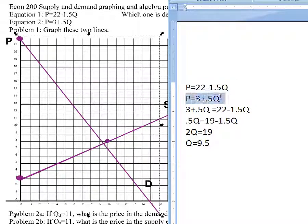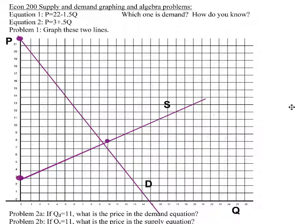So put 9.5 into either one of these equations. Let's say put it into the supply equation here, for instance. Price is equal to 3 plus a half of 9.5. What is a half of 9.5? Well, it's 4.75. And so price equals 3 plus 4.75, we get a price of $7.75. So our equilibrium quantity is 9.5, price 7.75.